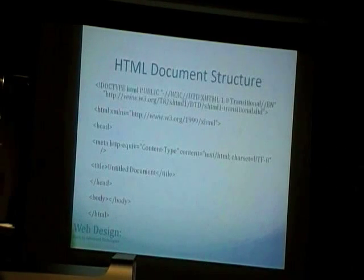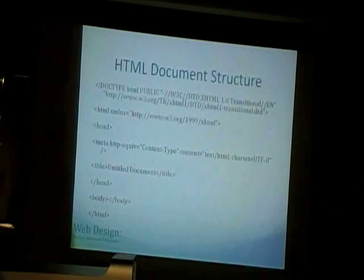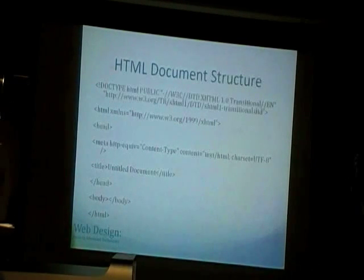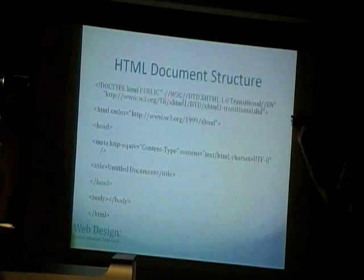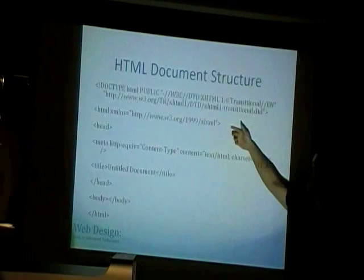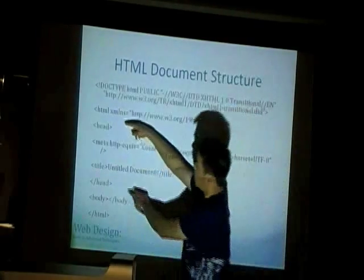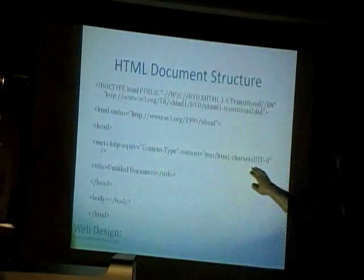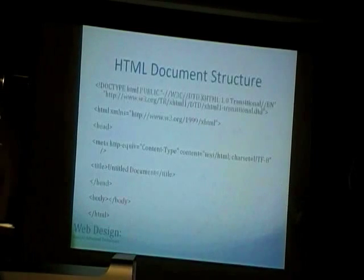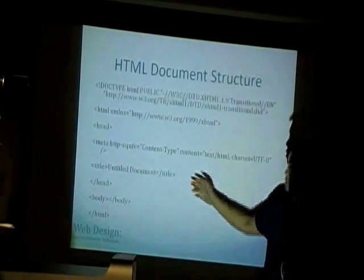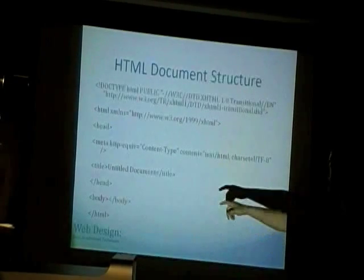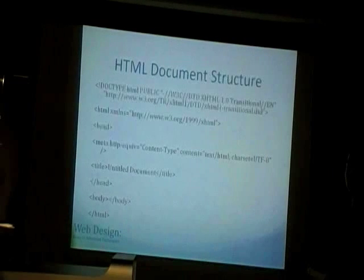A typical HTML document structure looks like this. You don't have to wrap your head around everything here — most of the time you're just going to be copying this. You have a document type, a namespace, and a header section which creates some metadata that tells you more about the document. The title is the title of the HTML page, and you have your body, which is where you'll be putting most of the HTML that you're going to be writing.